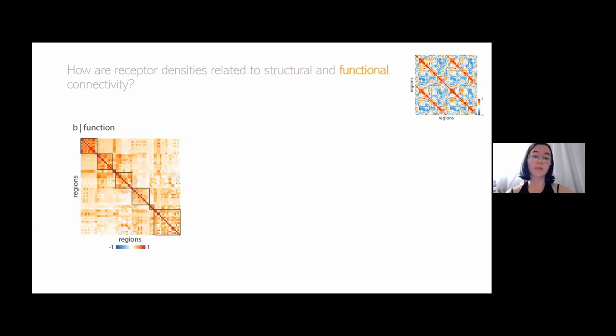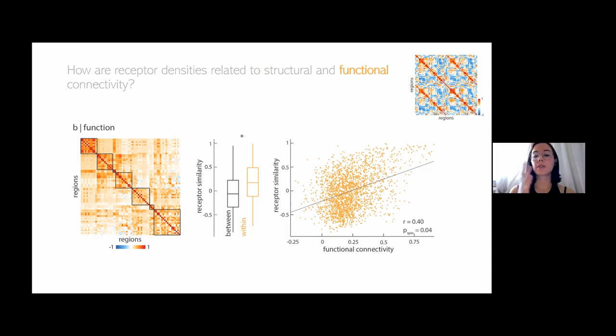The second part was functional connectivity. Really analogously, now we're looking at the functional connectome. Those are Pearson correlations between the fMRI BOLD time series between every pair of regions. We asked whether brain regions within the same resting state networks are more likely to show greater receptor similarity than brain regions between resting state networks. We find that is the case again. We also find that receptor similarity is correlated with functional connectivity after we regress distance out of both of them.